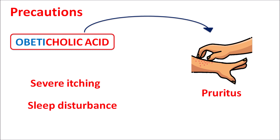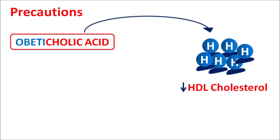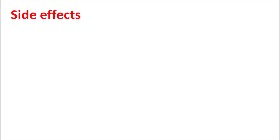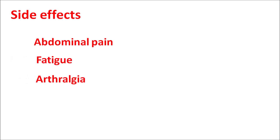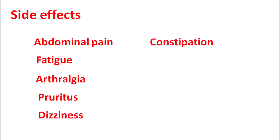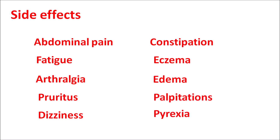Obeticholic acid can reduce HDL cholesterol levels — HDL is considered good cholesterol and should be in the range of 40 to 60 mg/dL. This drug may reduce HDL below 40 mg/dL, increasing the risk of atherosclerosis, so it should be used carefully in patients with cardiovascular risk factors. Important side effects include abdominal pain, fatigue, arthralgia (joint pain), pruritus (severe itching), dizziness, constipation, eczema, peripheral edema, palpitations, and pyrexia (increased body temperature).